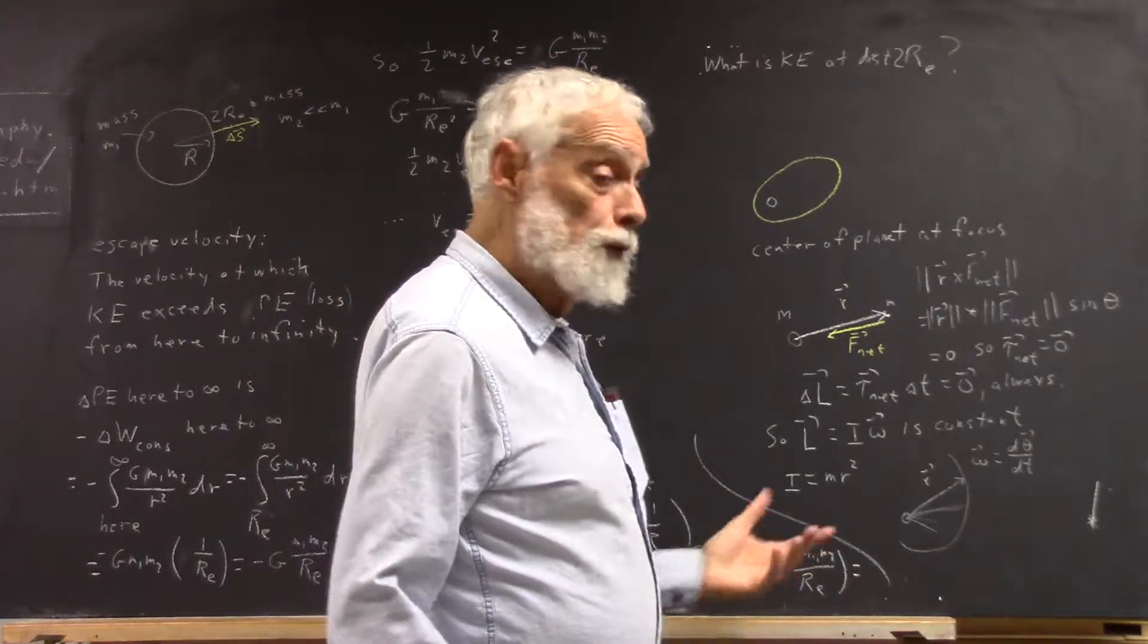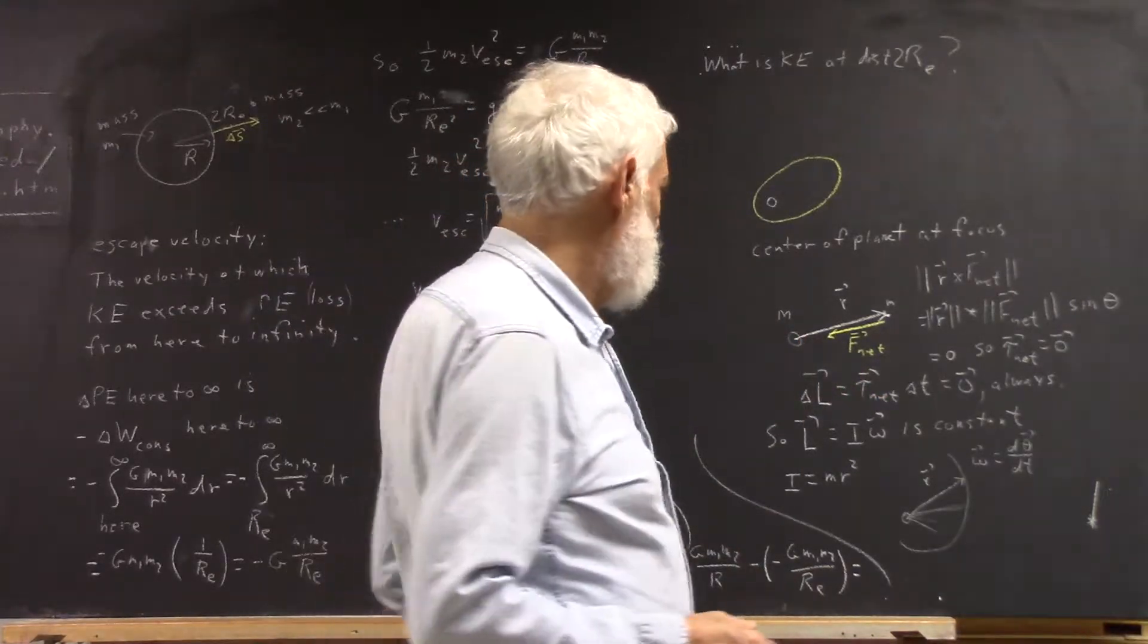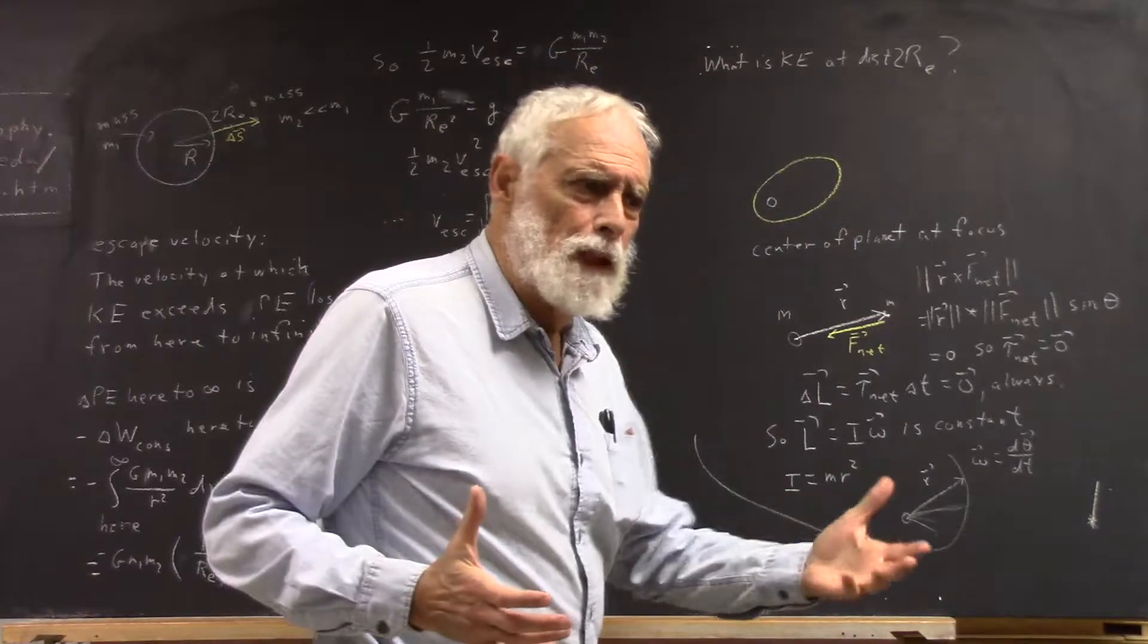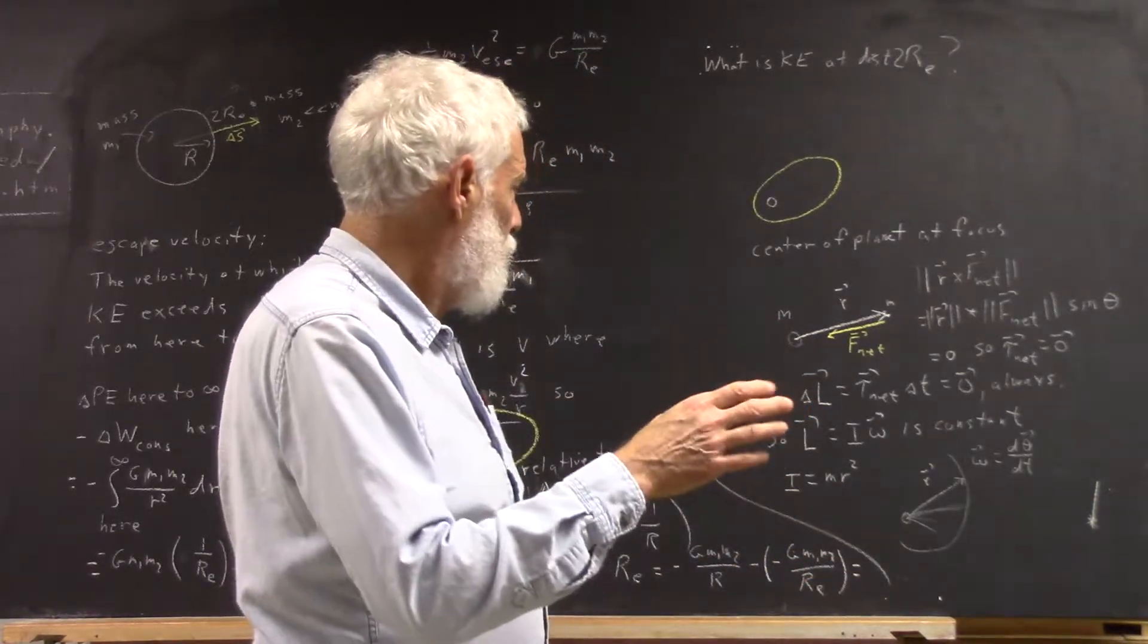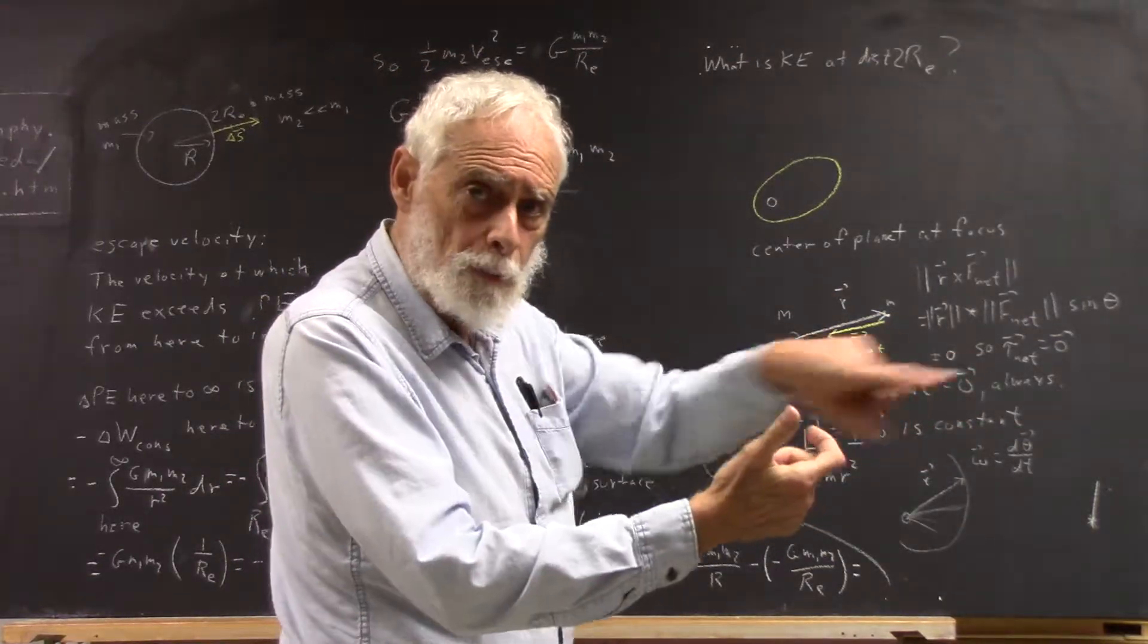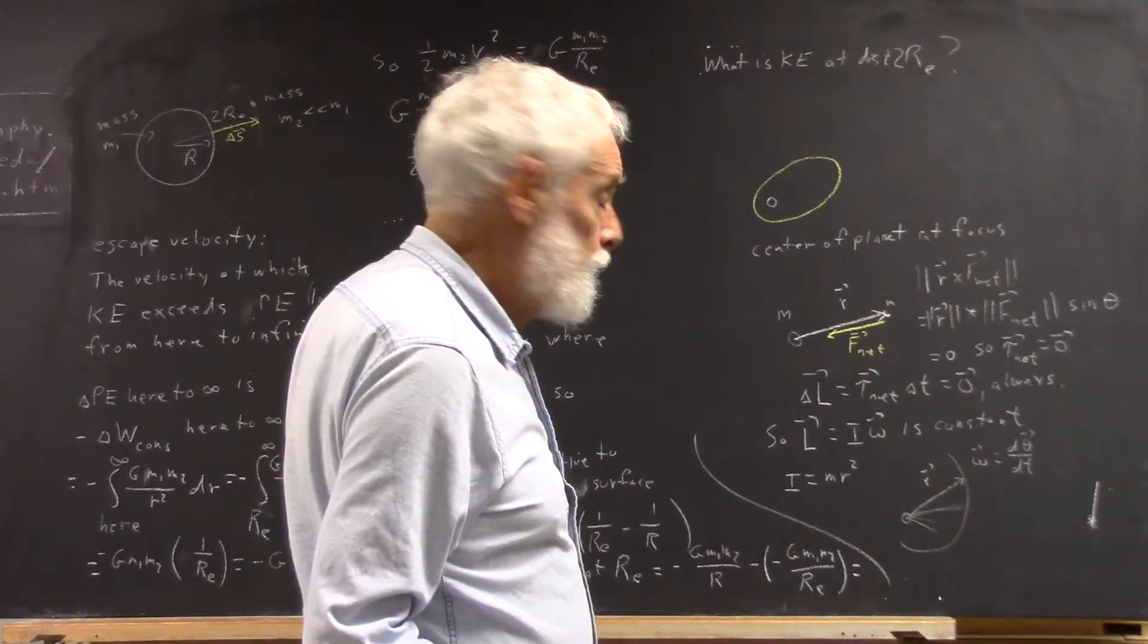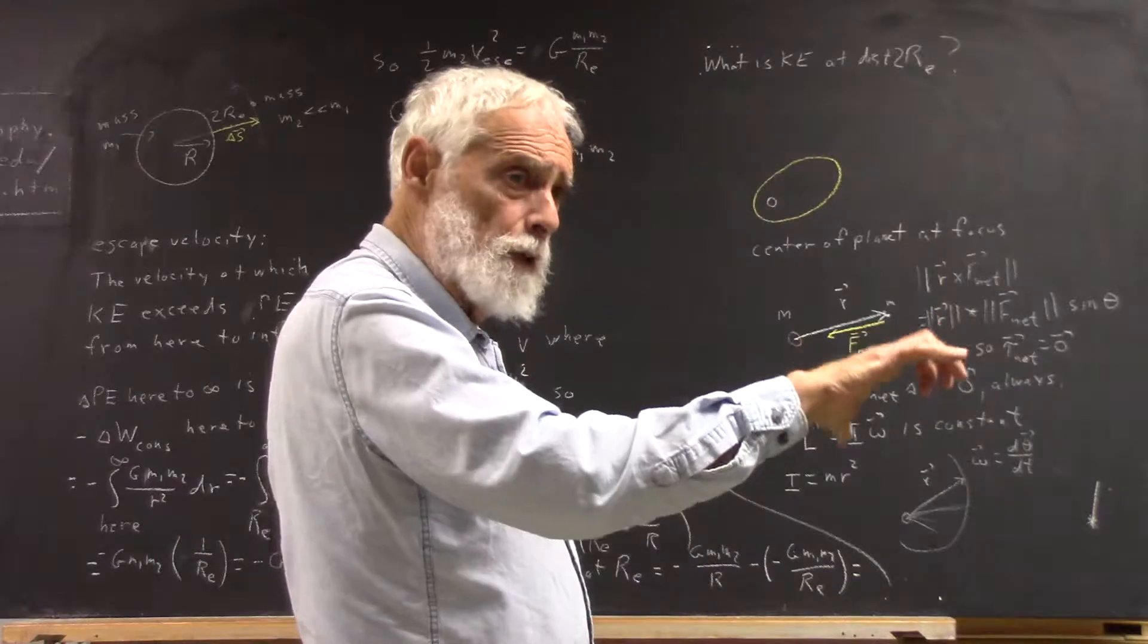If you do it as a cross product, r cross F_net, in the first place, you have no idea in what direction to move your thumb. You can cross r toward F_net from any direction since they are both along the same line. So there's no unique direction for the cross product.